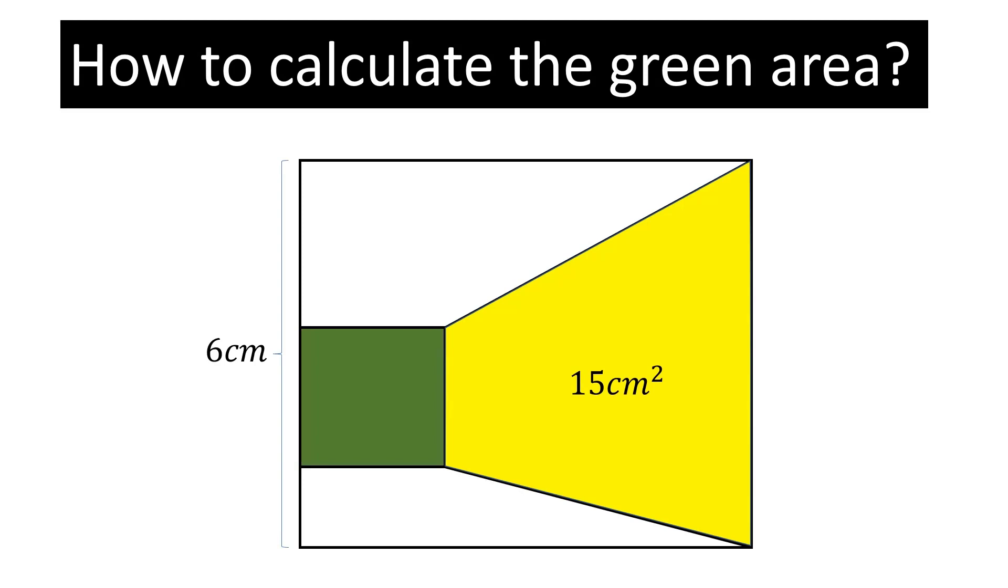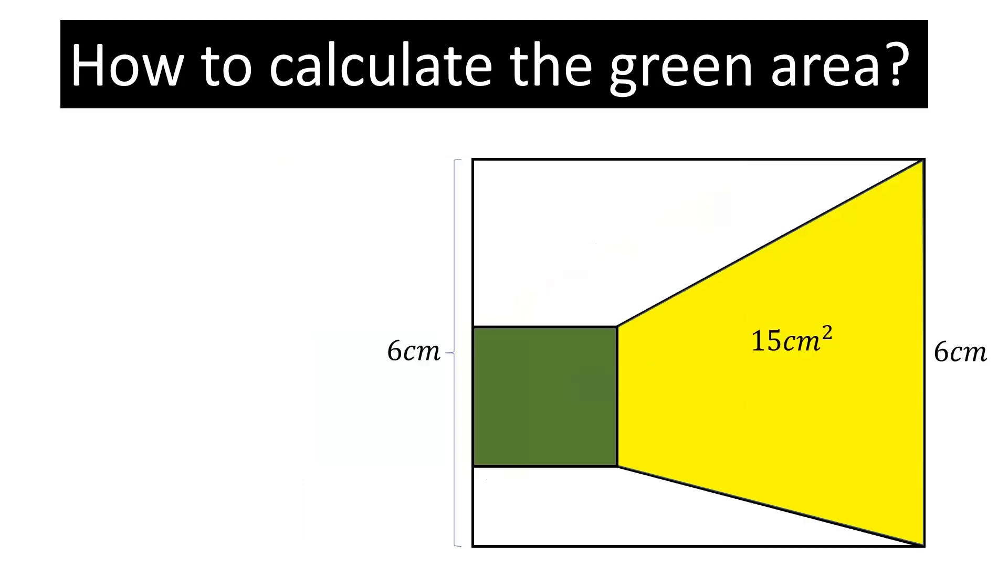Let's begin to solve the question. Let side of the small square is a, then we can write that the height of the trapezium will be 6 minus a. Because the side of the square is 6, so the height of the trapezium will be 6 minus a.